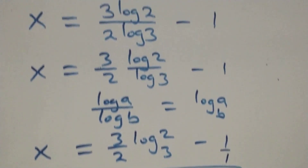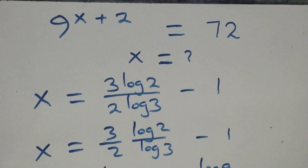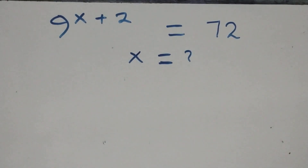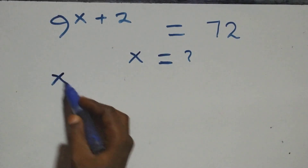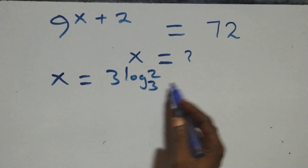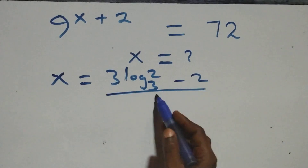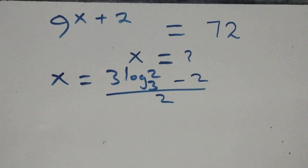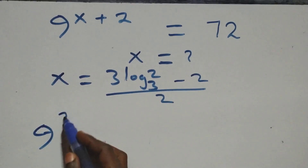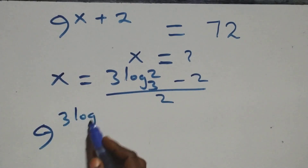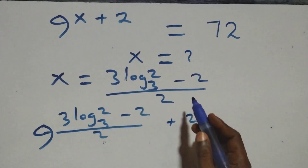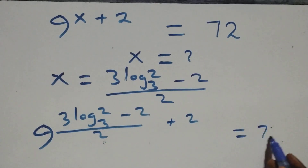Let's check here if this satisfies the given problem. We substitute the value of x, which is x equals three log 2 base 3 minus 2, all over 2. What we have here becomes 9 raised to power (three log 2 base 3 minus 2 over 2) plus 2 — is this equals 72 on this side?